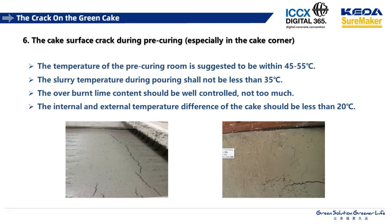The other defect is cake surface cracking during pre-curing, especially at the cake corners. Temperature is very important during pre-curing. The temperature of the curing room should be controlled within 45 to 55 degrees, and the slurry temperature during pouring should not be below 35 degrees. Also, the overburnt lime content should be controlled. An internal and external temperature difference in the cake of more than 20 degrees may cause cracking during pre-curing.